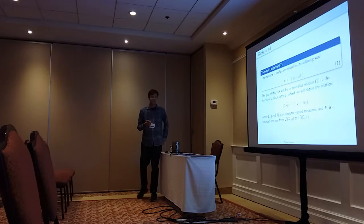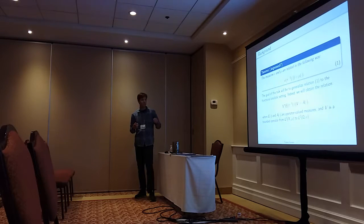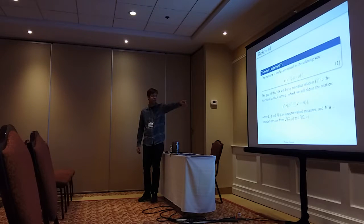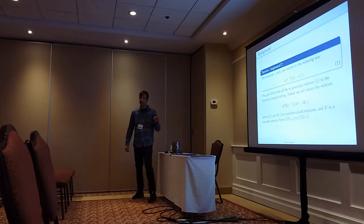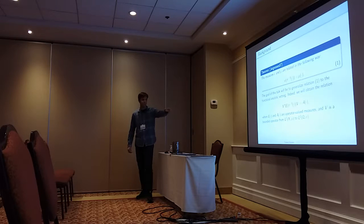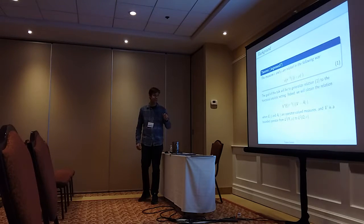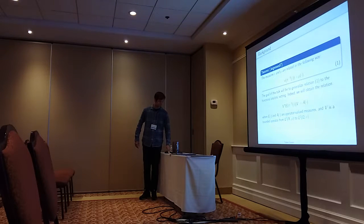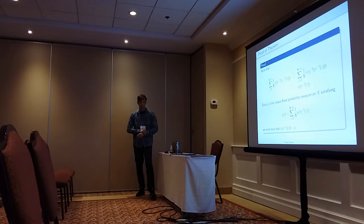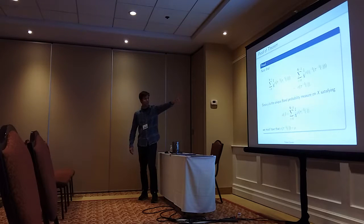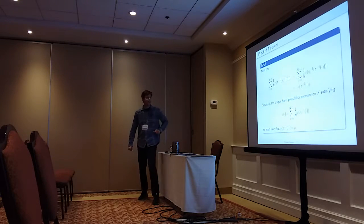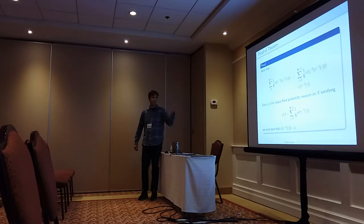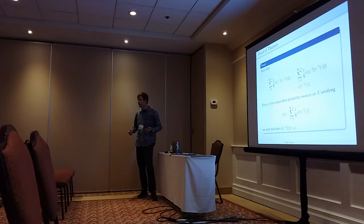This leads to the proposition that nu and mu are related via the coding map: nu of pi inverse equals mu. The main goal of this talk is to generalize this relation to the functional analytic setting — by the end of the talk we'll obtain the relation v* E(pi inverse ·) v = A, where E and A are operator-valued measures and v is a bounded operator from L2 of (X, mu) to L2 of (omega, nu). For a proof of this classical result, it follows from the uniqueness of nu and mu: using the lemma to interchange pi inverse of sigma_i inverse with tau_i inverse pi inverse, by uniqueness of nu that equals nu of pi inverse; and since nu pi inverse satisfies the same relation as mu, they must be equal.